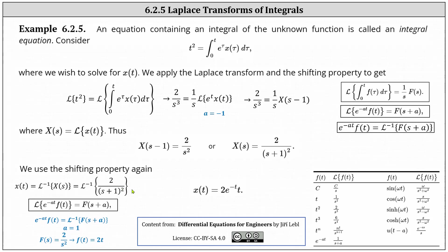To find the inverse Laplace transform we again use the shifting property: e^(−at) times f(t) equals the inverse Laplace transform of F(s + a). In our case a equals one, and F(s) without the shift is two divided by s². Taking the inverse Laplace transform gives f(t) equals 2t. Putting all the pieces together, the inverse Laplace transform of two divided by (s + 1)² equals e^(−t) times 2t, so x(t) equals 2te^(−t).